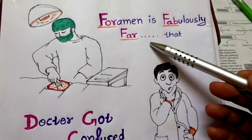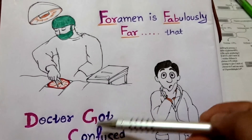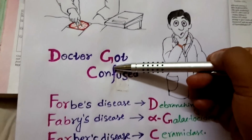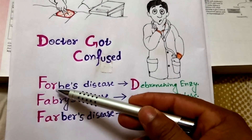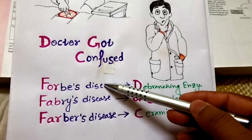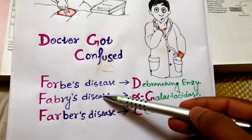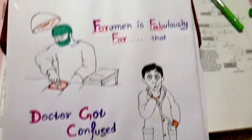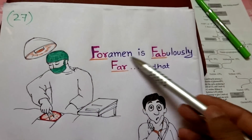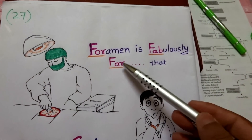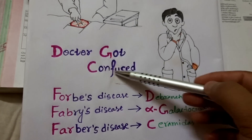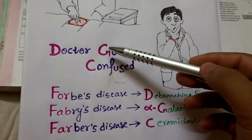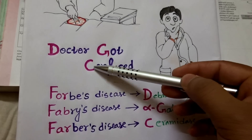Here if we plot these two lines, we can find this mnemonic. Forbes' disease, Fabry's disease and Farber's disease stand for Foramen, Fabulous, and Far. And the doctor got confused — D, G, C.